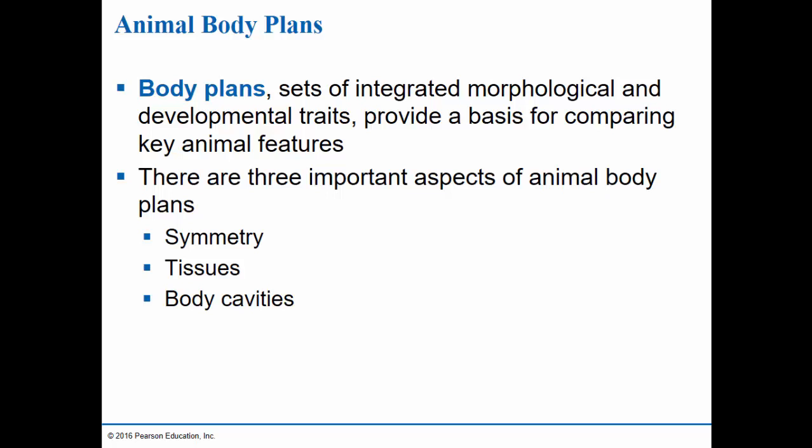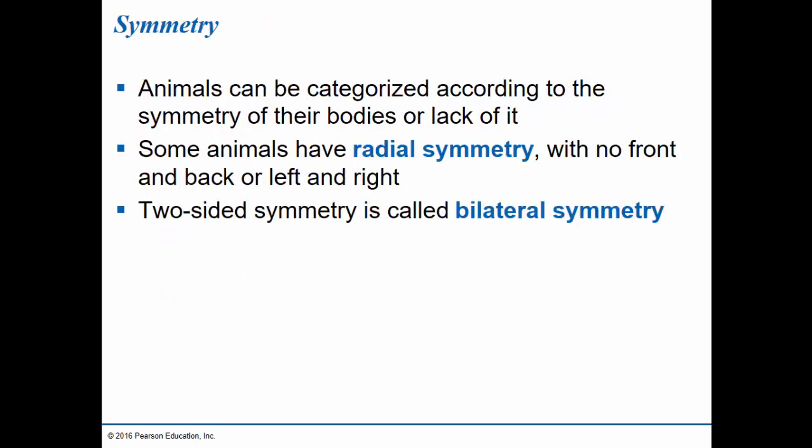Comparing these body plans provides a way for us to distinguish between some of the major groups of animals. The three important aspects of animal body plans are: symmetry, which could be radial or bilateral; the types of tissues present — animals have one, two, or three tissue types; and body cavities, like the gastrovascular cavity versus the complete digestive system. Sponges are simple animals lacking any type of symmetry — there's no way to draw a line through them and have matching sides.